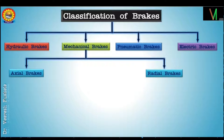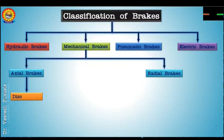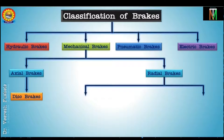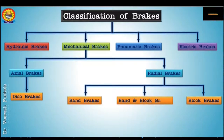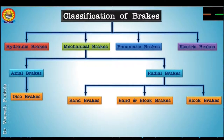In axial brakes, the braking force is applied parallel to the axis, and in radial brakes, the braking force is applied in the radial direction. Axial brakes are generally the disc brake, and radial brakes are classified as band brake, block brake, and band-and-block brakes. Though the band brake is classified under radial brakes, the force is actually applied in the tangential direction. The band brake is also used to hold parts at their position, which is applicable in hoists and lifts. Band brakes are further classified as simple band brake and differential band brake.